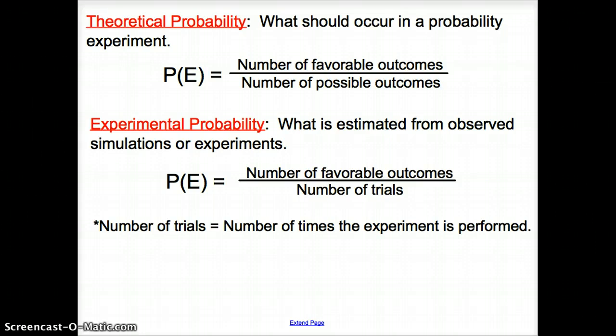Now, experimental probability is what actually happens. So the estimated from the observed simulations or experiments, so you perform the simulation or experiment, and you keep track of what actually happens. So let's take a look at some examples.